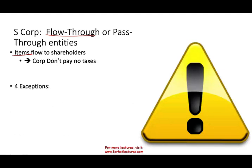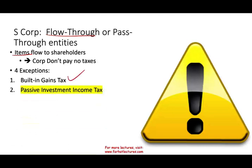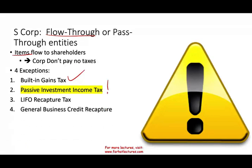However, we have four exceptions. The first exception is the built-in gains tax, which we already covered in a prior session. The second is passive investment income tax, which we will cover in this session. And we have two more — LIFO recapture tax and general business credit recapture — which I will cover briefly in the following session.